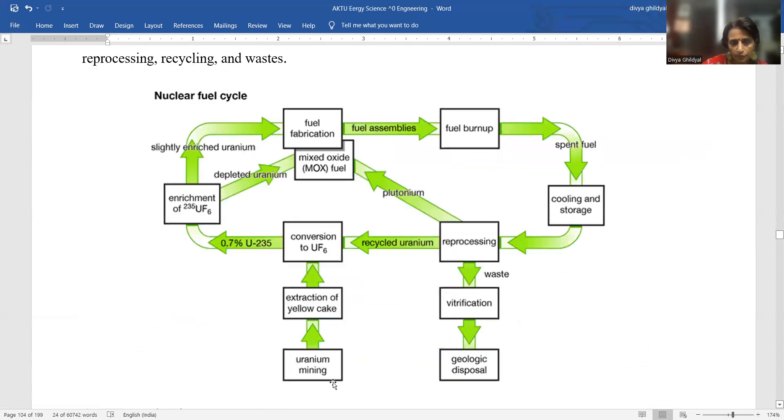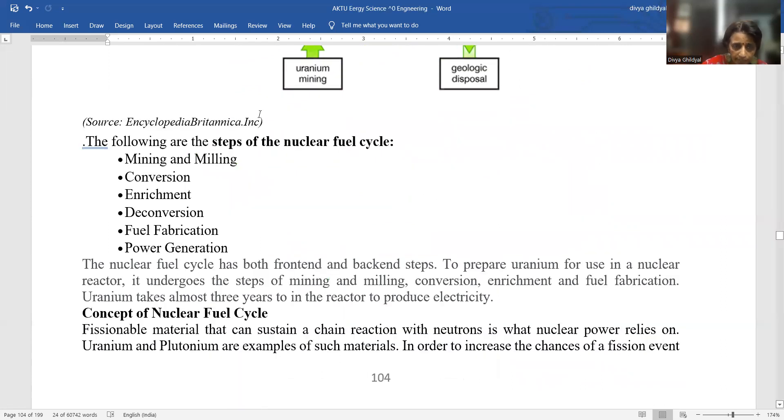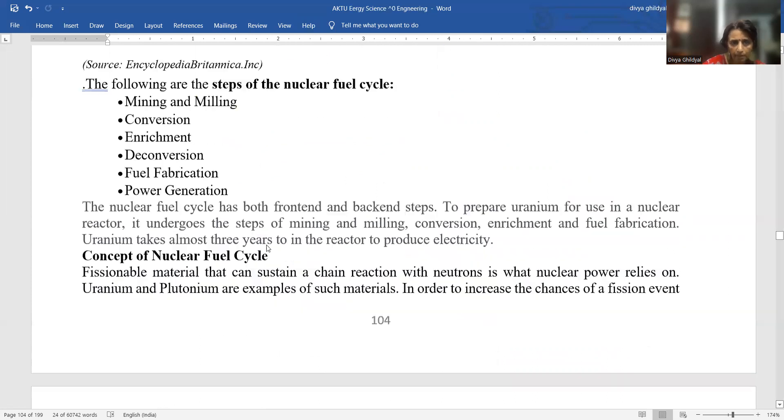Here is the nuclear fuel cycle. Uranium you are getting from mining. The yellow cake, so-called uranium, is extracted, converted to UF6. After that, it is enriched and slightly enriched, goes for fuel fabrication. And either, or it is at times mixed with some oxide, the fuel assemblies are then used. And if cooling and storage is required, that is done and again sent for reprocessing. Whereas the waste goes into geological disposal. Nuclear fuel cycle: mining and milling, conversion, enrichment, deconversion, fuel fabrication and power generation.